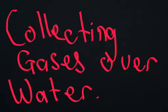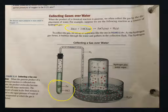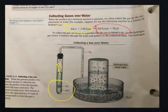We are going to talk about collecting gases over water. We have the apparatus set up to collect gas. The two components are zinc and HCl. You put zinc and HCl in a test tube and collect the product, which goes up into the collection tube. The product is ZnCl2 and hydrogen.